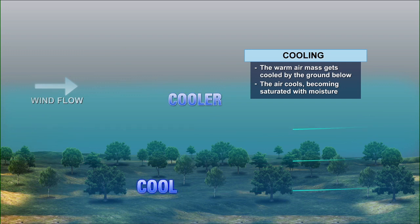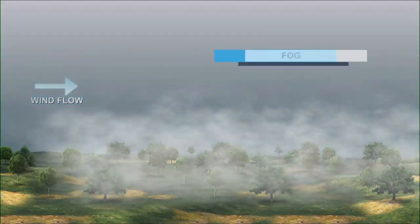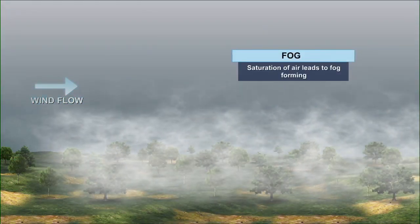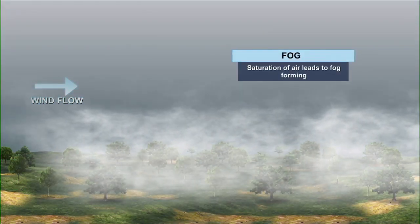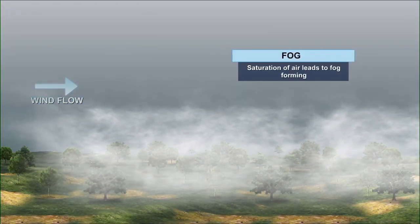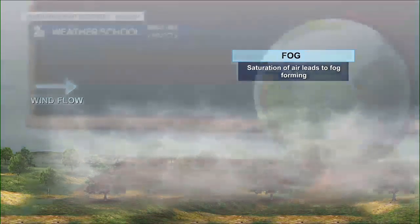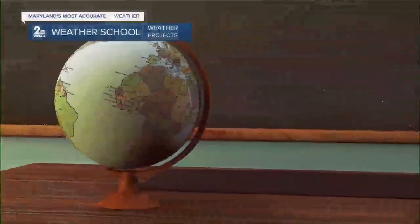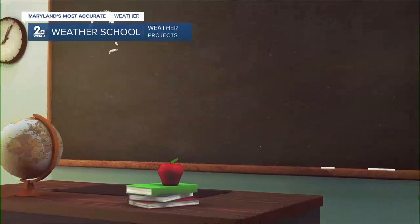The warm air mass gets cooled by the ground below, and the air cools becoming saturated with moisture. The saturation of the air leads to fog forming across the area.